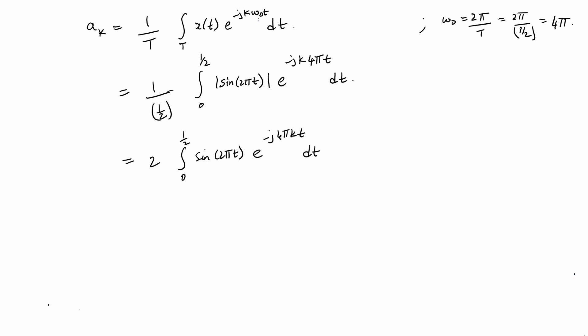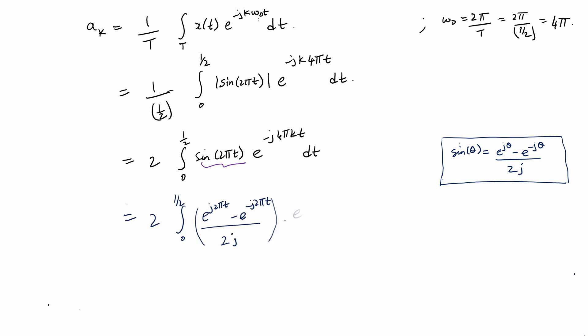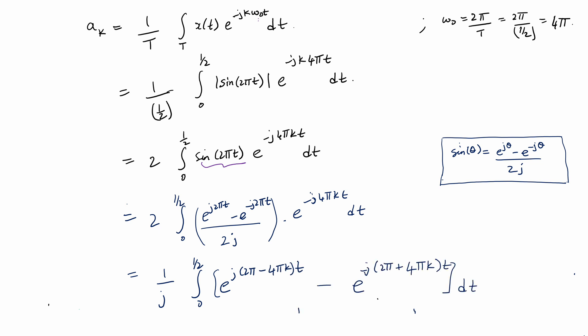We simplify this integral by expressing sin(2πt) as a combination of complex exponentials: sin(θ) = (e^(jθ) − e^(−jθ)) / (2j). So sin(2πt) = (e^(j2πt) − e^(−j2πt)) / (2j). Factoring this out, we express the integral as a combination of two exponential integrals, pulling out 1/(2j) and canceling the factor of 2, giving 1/j.